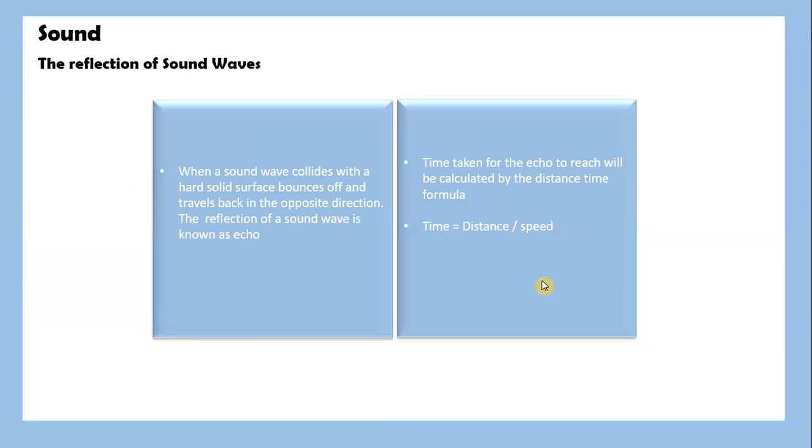The reflection of sound waves: when the sound waves collide with a hard solid surface, they bounce off and travel back in the opposite direction. We call this reflection, which produces echo. Time taken for the echo can be calculated by the distance-time formula, where time equals distance divided by speed.